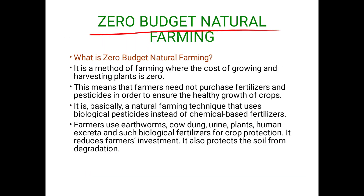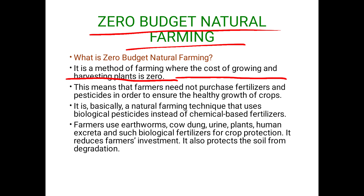The next topic is Zero Budget Natural Farming (ZBNF). It is a farming method where the cost of growing and harvesting crops is effectively zero. This refers specifically to farm input costs — farmers do not need to purchase expensive fertilizers and pesticides for healthy plant growth.